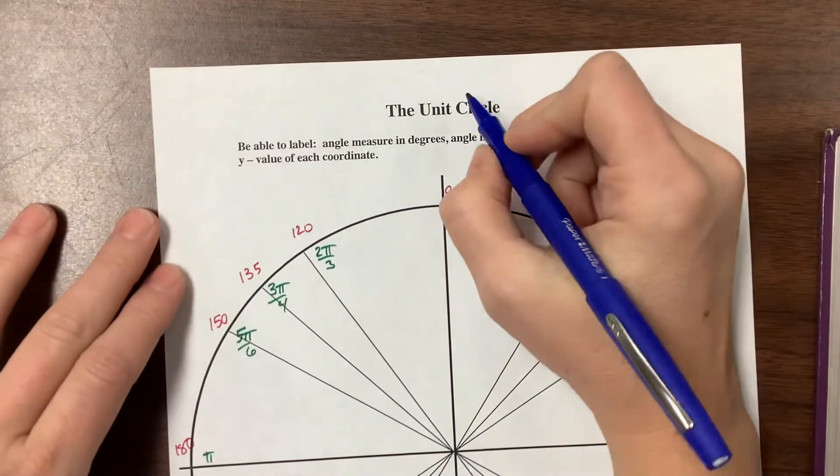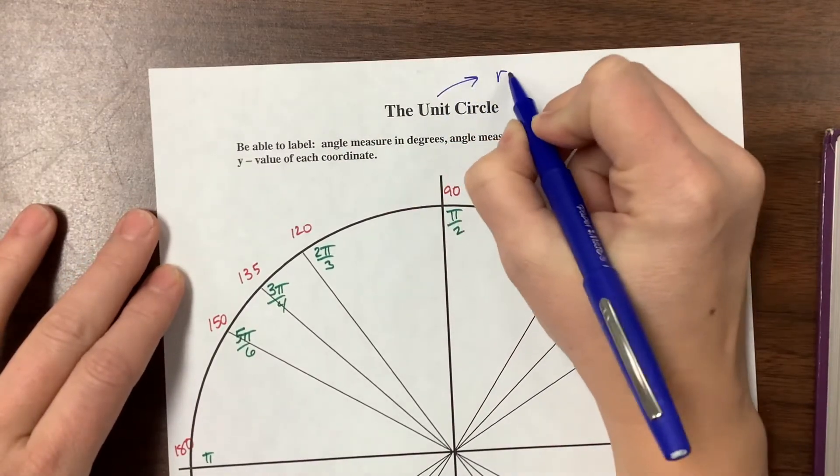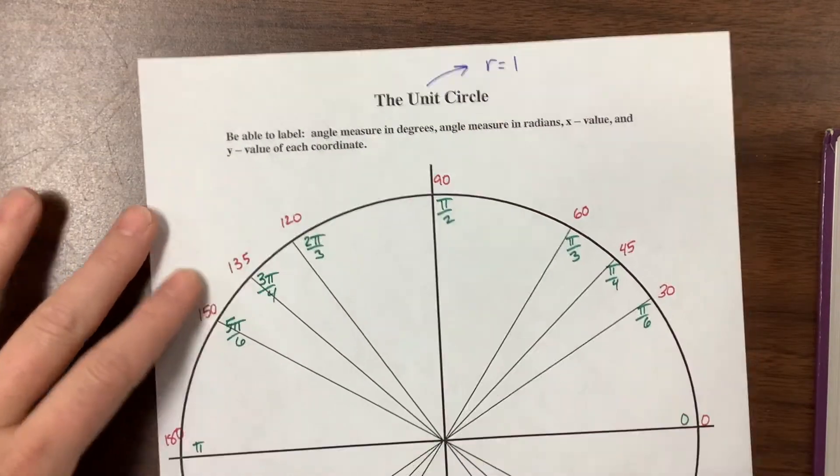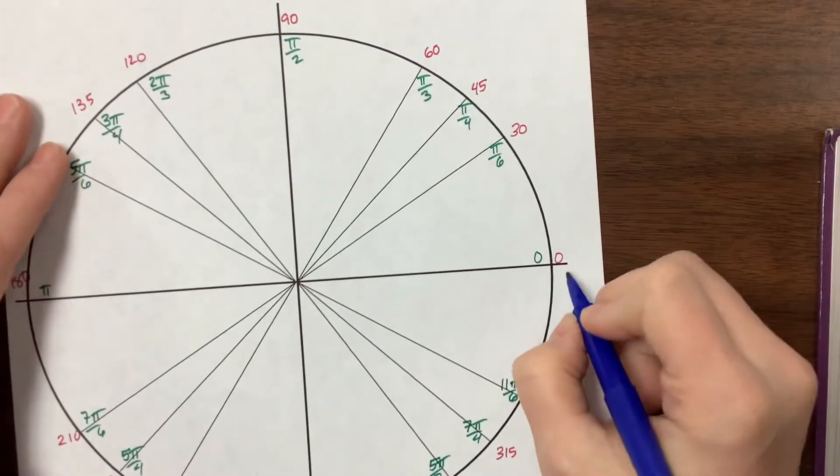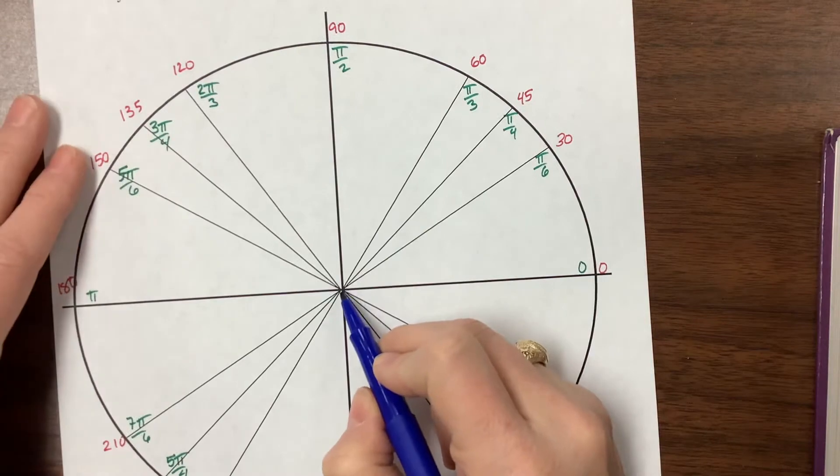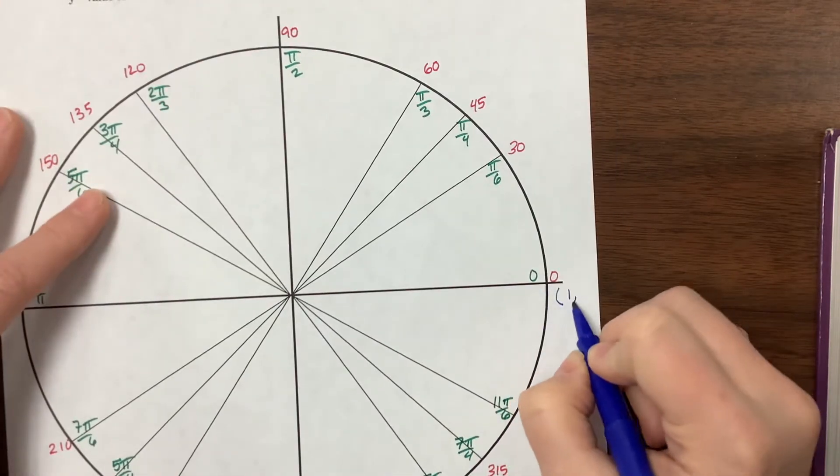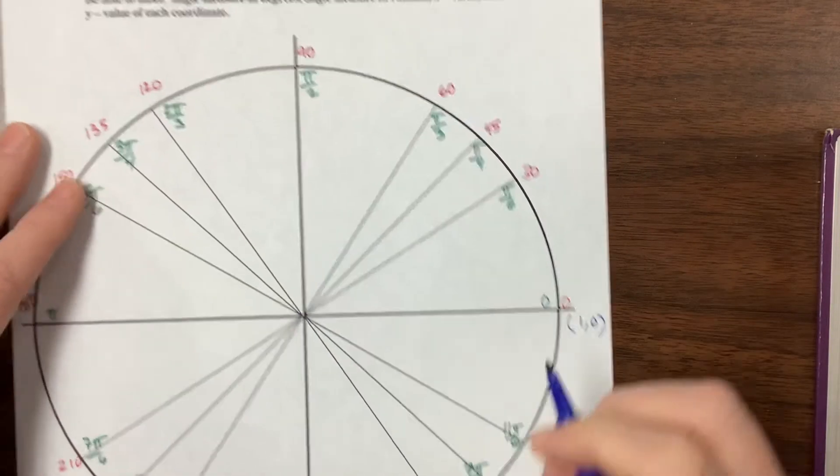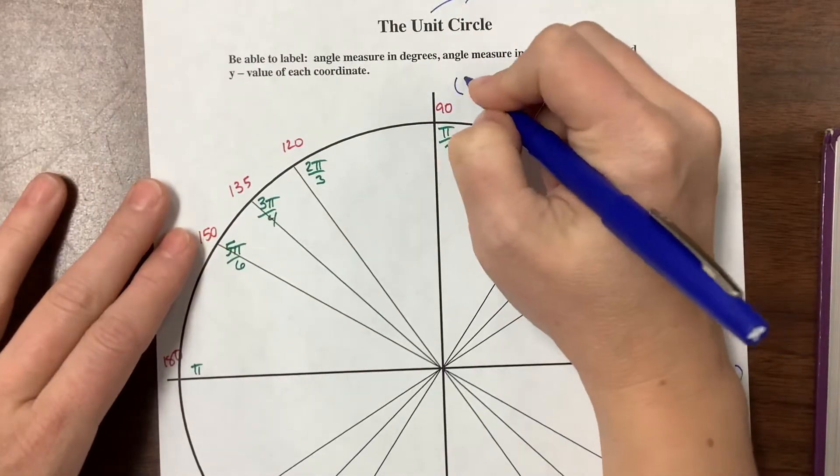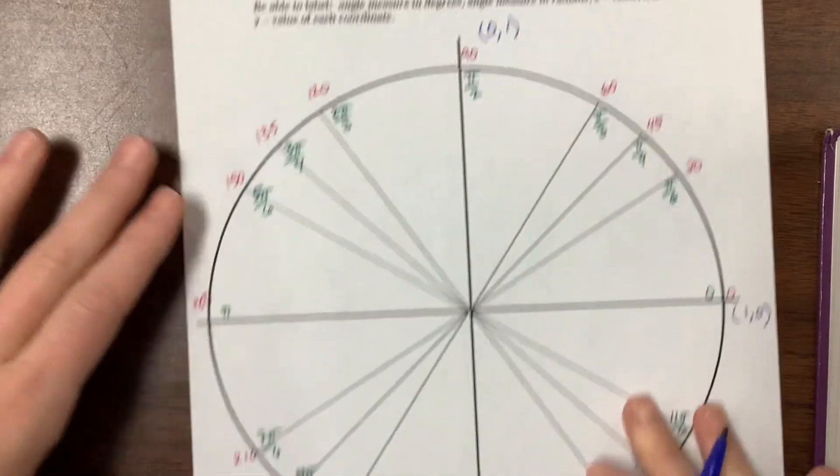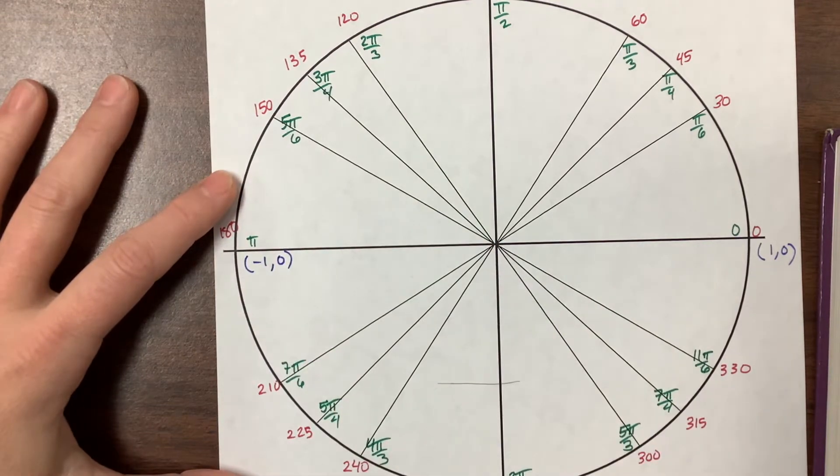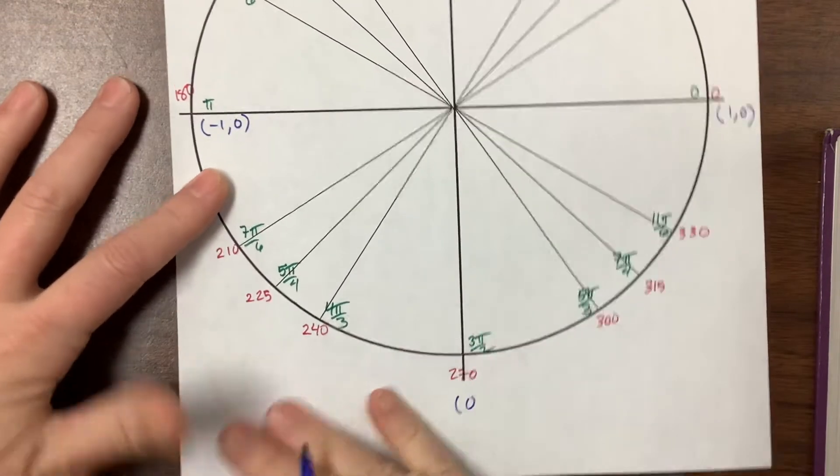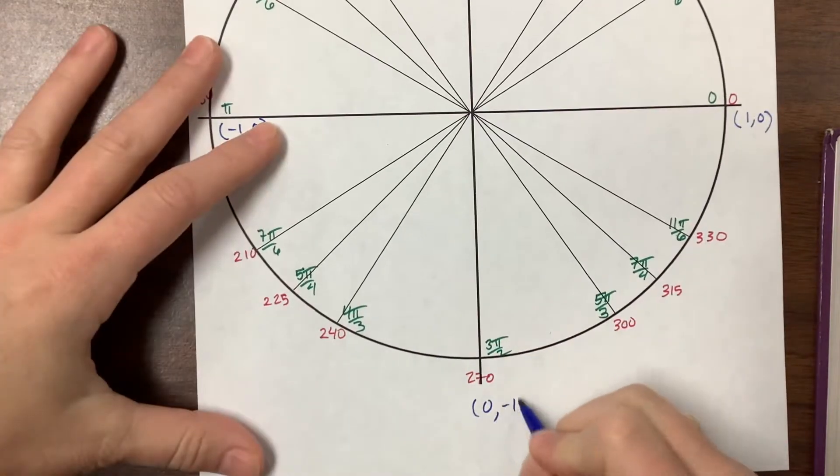It's called the unit circle because its radius is one unit, so the radius all the way around the circle is one. We're centered at the origin, so this becomes the point (1, 0). Over here we have the point (0, 1), over here this is the point (-1, 0), and down here this is (0, -1).